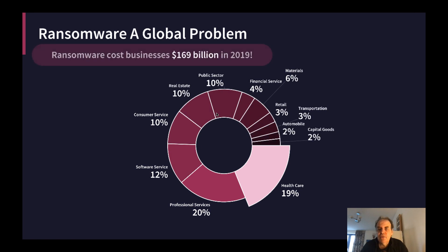Ransomware itself is a global industry. It is thought that it cost businesses $169 billion over 2019, and healthcare is one of the most significant areas impacted, especially in the US. Professional services, software, public sector, and real estate are also all affected by this problem around ransomware.